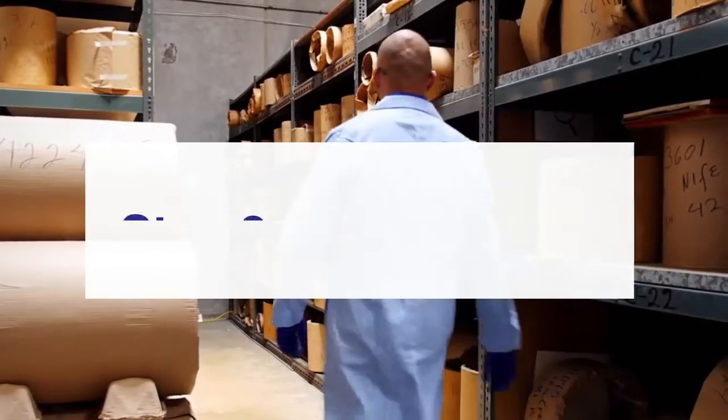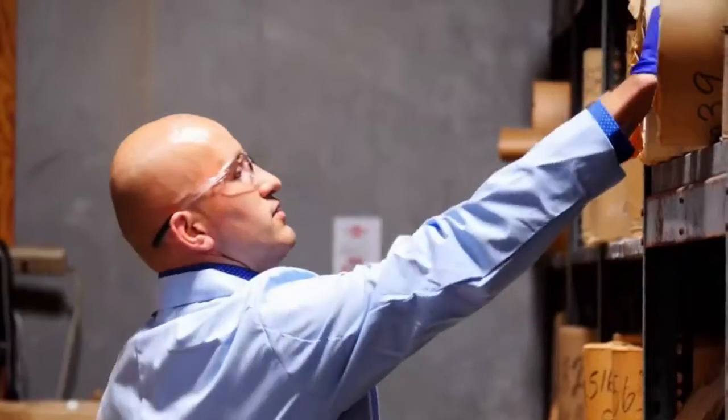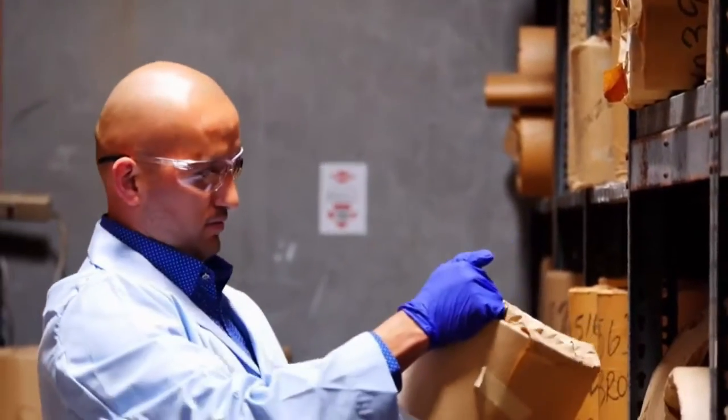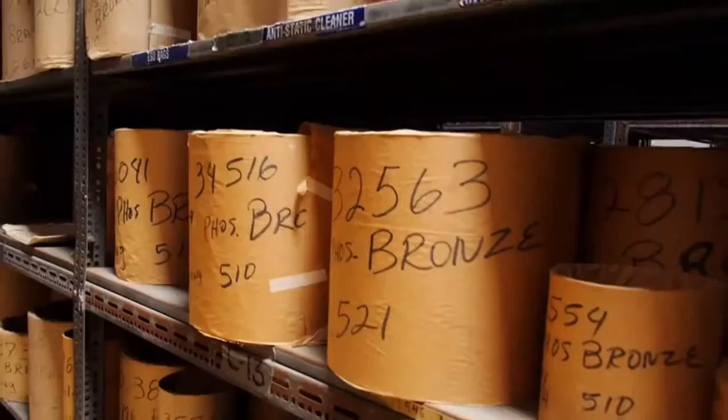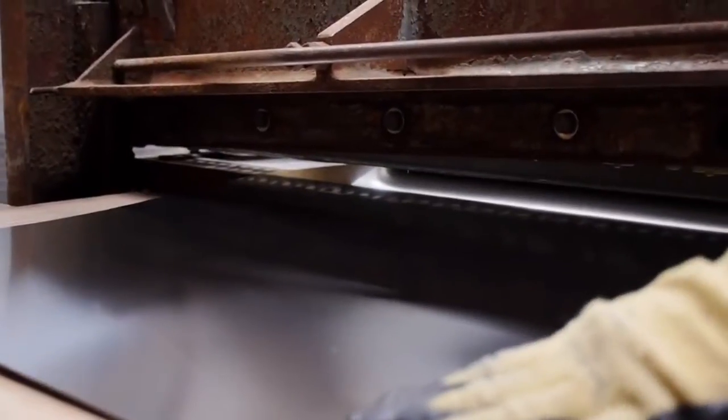The next step in the process is selecting material. We work with a wide variety of metals including copper alloys, stainless steel, aluminum alloys, or nickel alloys. Material is then cut into sheets.